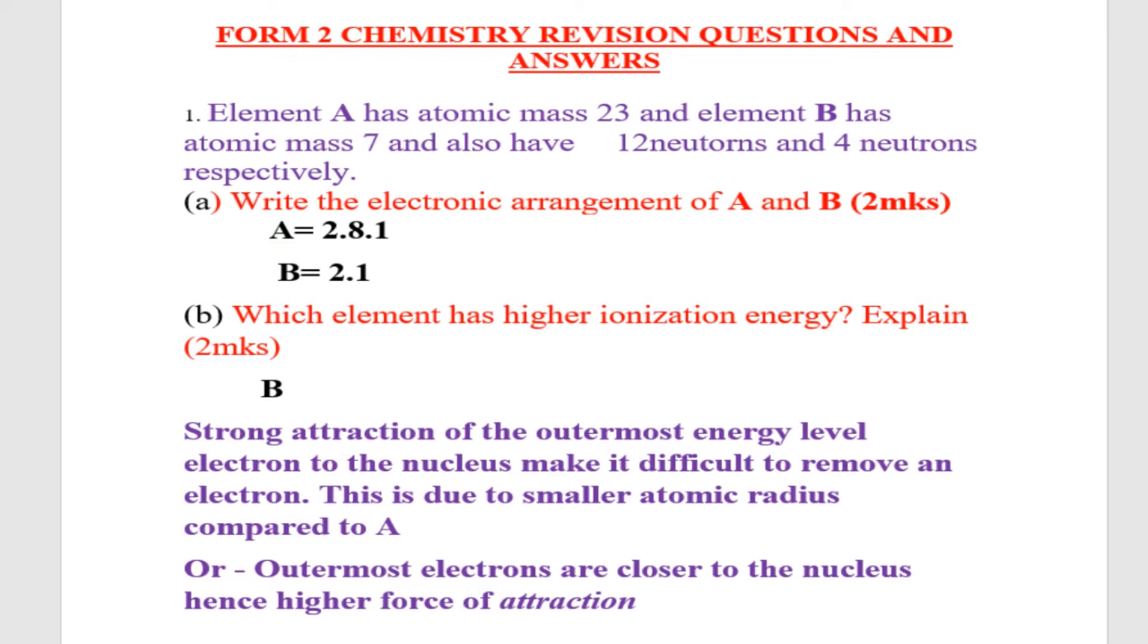Question number 1: Element A has atomic mass of 23, and element B has atomic mass of 7 and also has 12 electrons and 4 neutrons respectively. Question (a): Write the electronic arrangement of A and B.